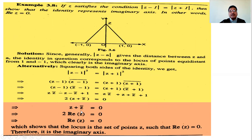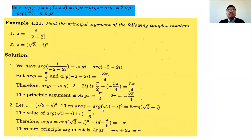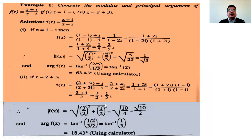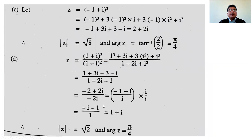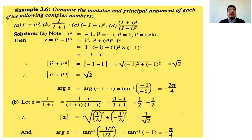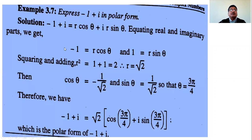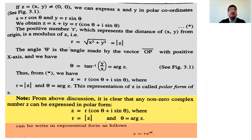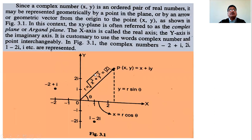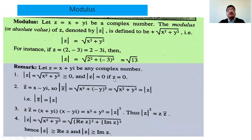Taking 2 as common factor gives Z + Z̄ = 0. We know that Z + Z̄ = 2·Re(Z), so 2·Re(Z) = 0, which gives Re(Z) = 0. This means the identity represents the imaginary axis.